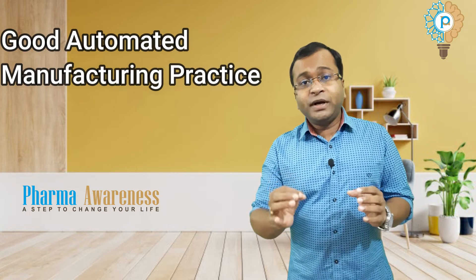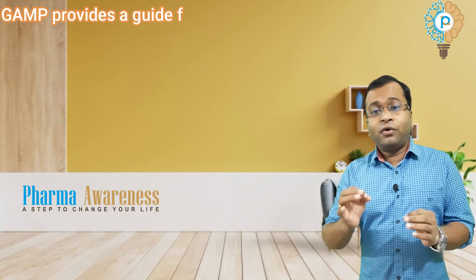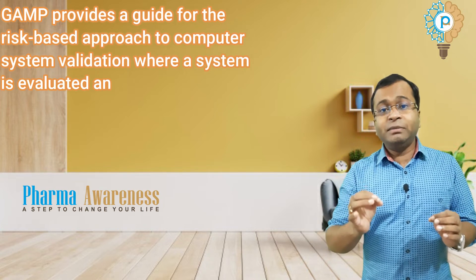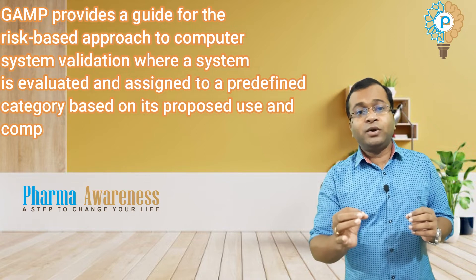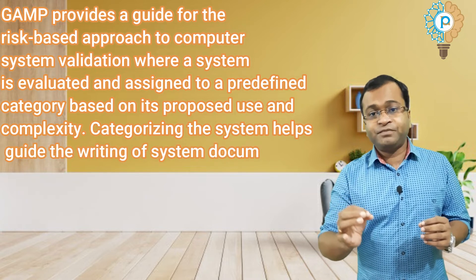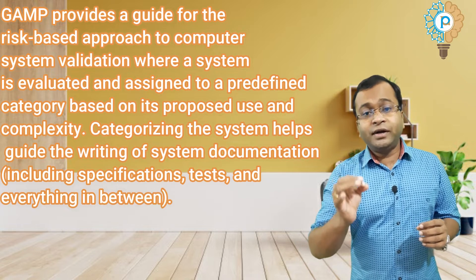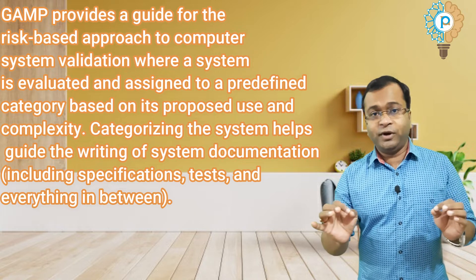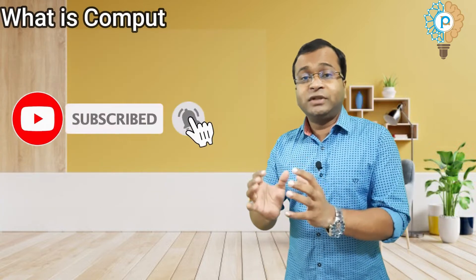GAMP stands for Good Automated Manufacturing Practice. GAMP provides a guide for a risk-based approach to computer system validations, where a system is evaluated and assigned to a predefined category based on its proposed use and complexity. Categorizing the system helps guide the retention of system documentation, including specification and testing. Now I will tell you what is computer system validation.